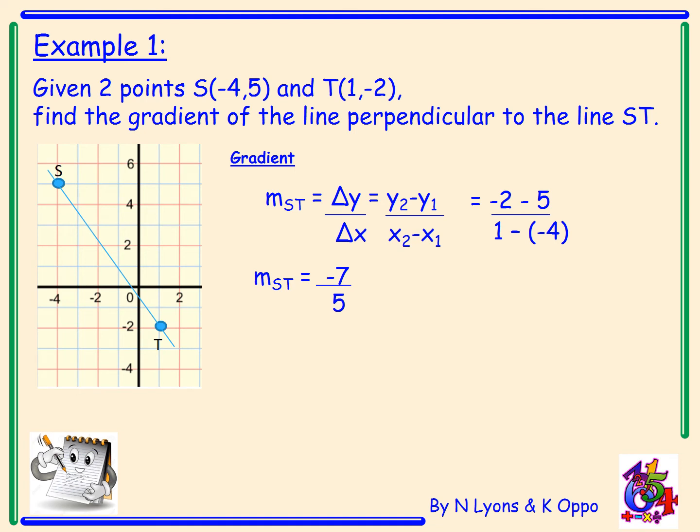Now I want to find the gradient of a line perpendicular to the line st. So the gradient st times a perpendicular gradient must equal minus one. Now when I'm working with fractions the best way of doing that is I take my fraction, invert it and change the sign. So the gradient of the perpendicular line would be five over seven. Double checking minus seven over five multiplied by five over seven will give me minus one.